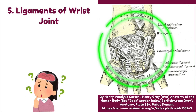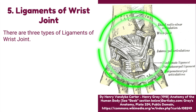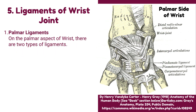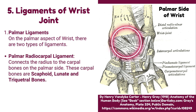Number 5: Ligaments of the wrist joint. There are 3 types: palmar ligaments, dorsal ligaments, and collateral ligaments. Palmar ligaments of the wrist joint — on the palmar aspect of the wrist, there are 2 types. Palmar radiocarpal ligament: it connects the radius to the carpal bones on the palmar side. These carpal bones are: scaphoid, lunate, and triquetral bones.